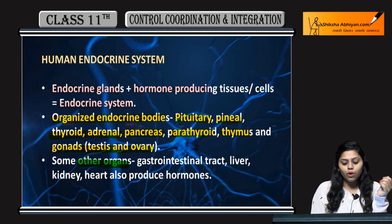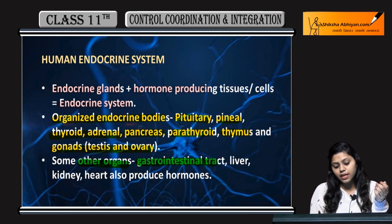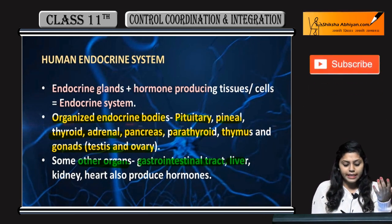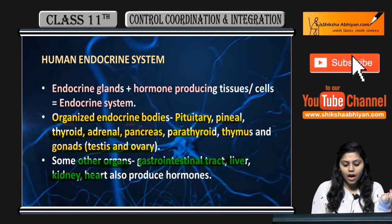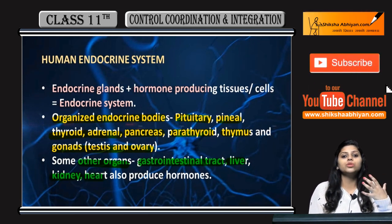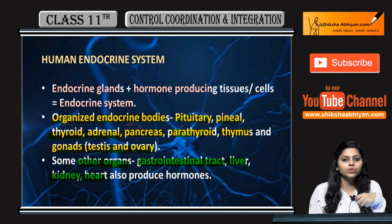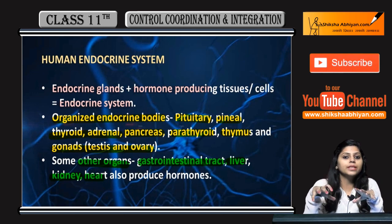Some other organs such as the gastrointestinal tract, liver, kidney, and heart also produce hormones. So all of these are part of the human endocrine system.